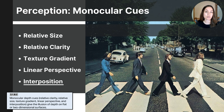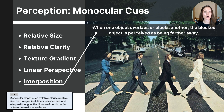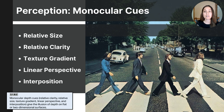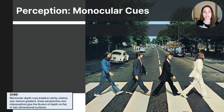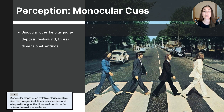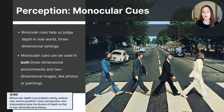Finally, we have interposition — a depth cue that indicates distance when images overlap one another. The object that is partially covered is perceived as being farther away. In the photograph, George Harrison's face slightly overlaps the white Volkswagen, indicating that he is closer to the viewer than the car. These are the five monocular cues for the AP Psychology exam. Binocular cues are only useful in three-dimensional real-world settings, whereas monocular cues can be used in real-world settings or when interpreting 2D images like photographs and art.